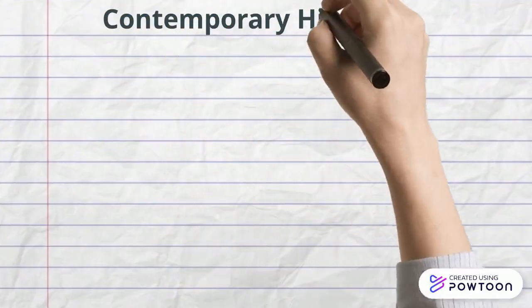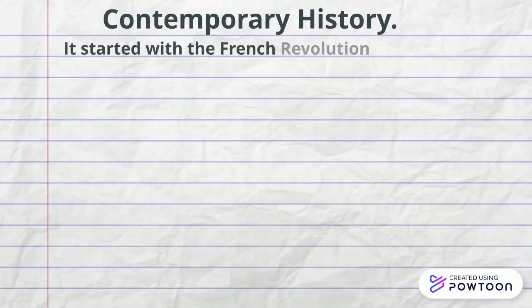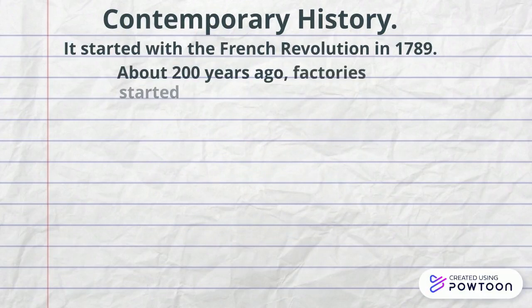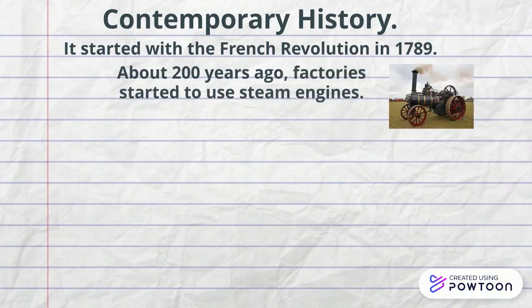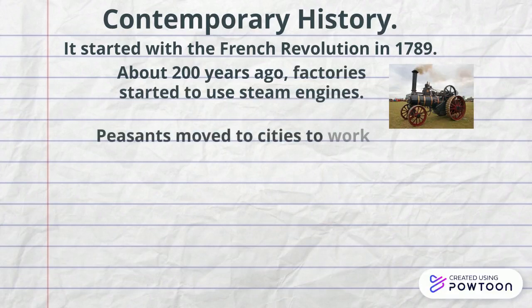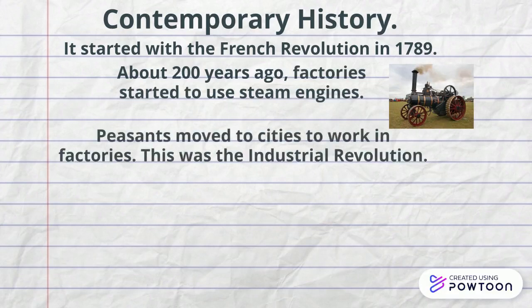Contemporary history started with the French Revolution in 1789. About 200 years ago, factories started to use steam engines — and here you are one. Peasants moved to cities to work in factories. This was the industrial revolution.